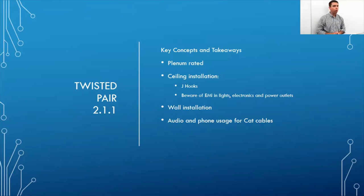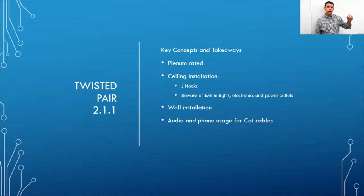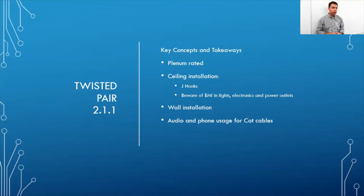A useful tip: if there are old wires already in place, find where they come out in the ceiling to locate existing holes or conduit. Attach your new wire and a new pull string to that old cable, then pull it down from below. At the very least it lets you pull through a pull string for future cables.